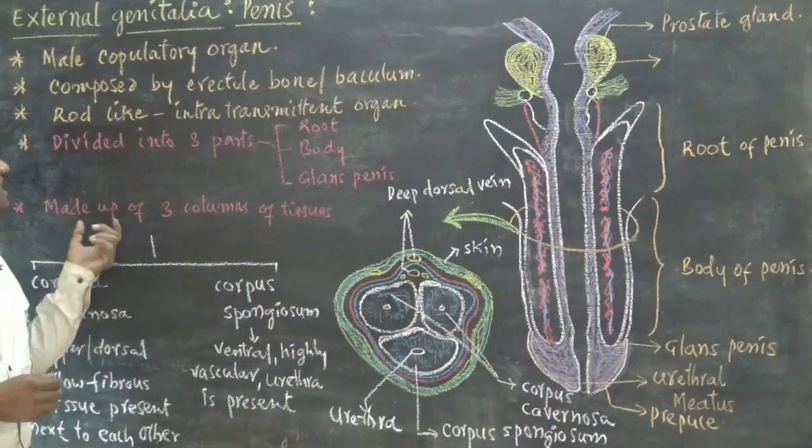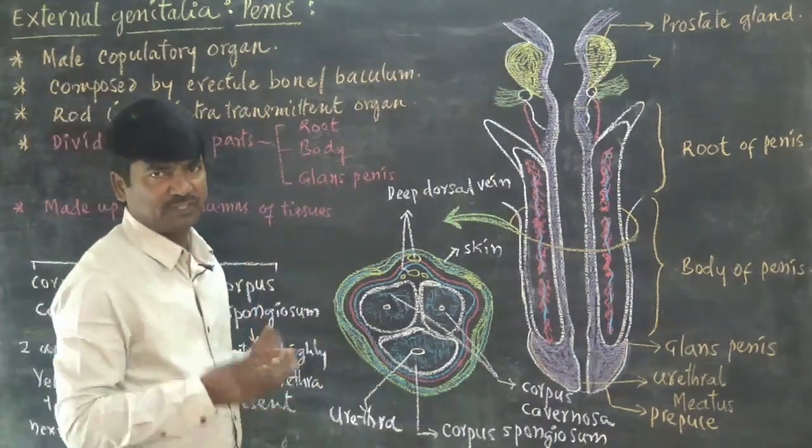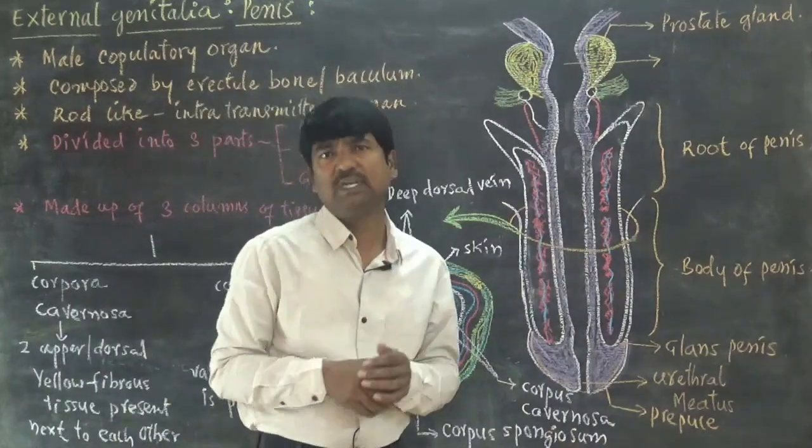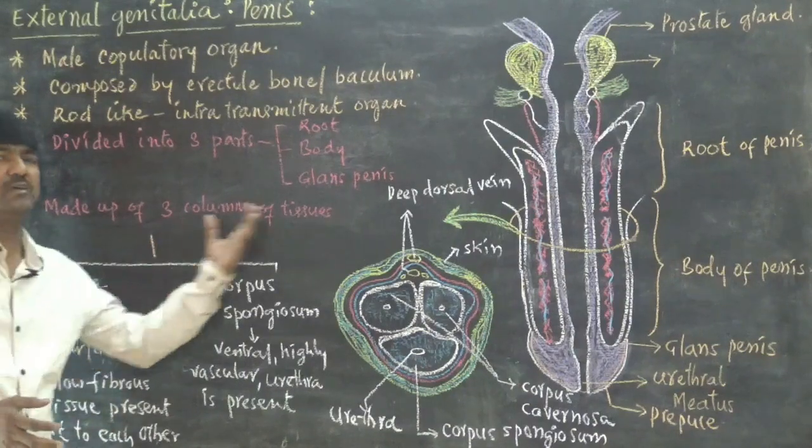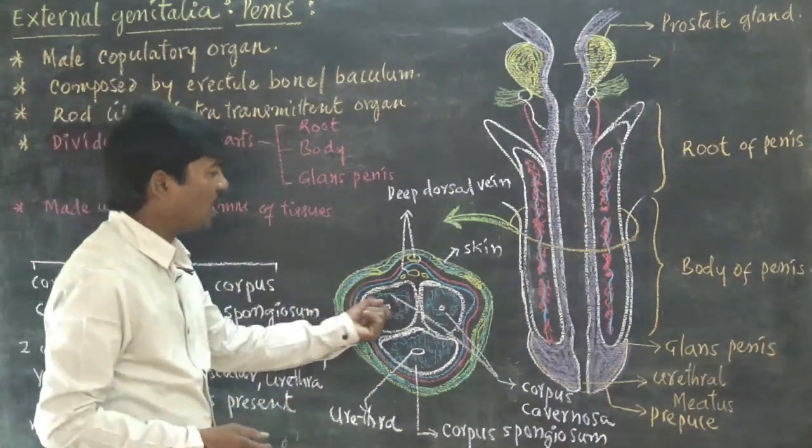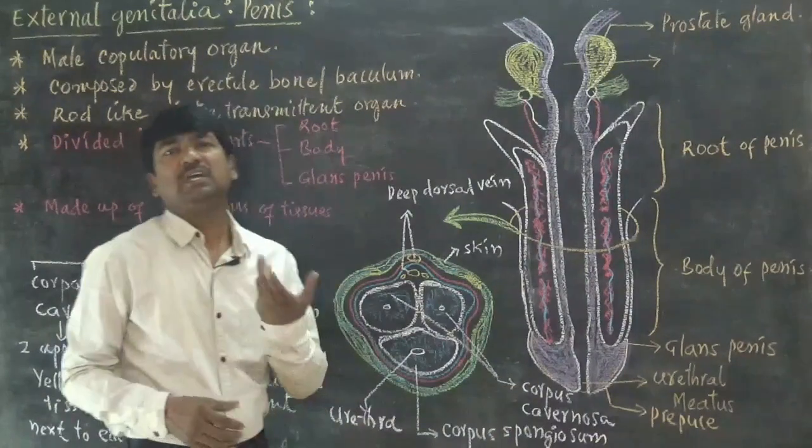If you see the internal structure of penis, we can identify three columns of tissues. They are located in two different parts. In the upper portion or dorsal part of the penis, we can identify two columns of tissues. Those columns are known as corpus cavernosa.